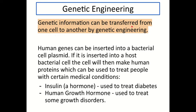Another human protein that we can engineer bacterial cells to produce is the human growth hormone, which is used to treat some growth disorders. This is another one that's quite common in exams as well, so I would know these two as quick examples in case they come up in any questions.